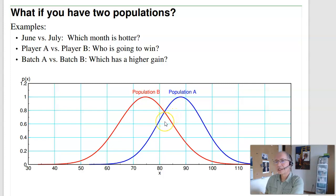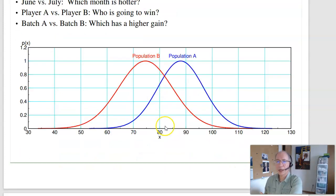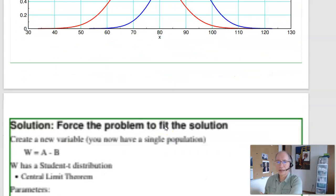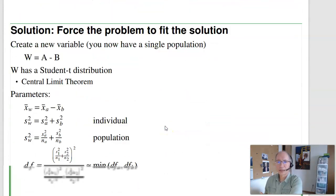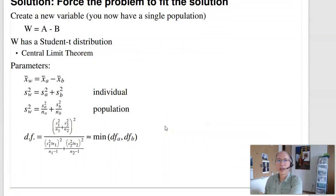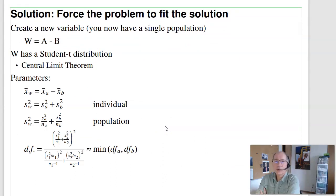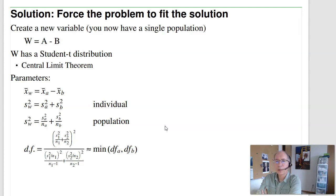That's a student t-test when you have two populations. The solution is to force the problem to fit the solution. Student t-distributions assume you have a single population — so create one. Create a new variable W that's the difference between A minus B.